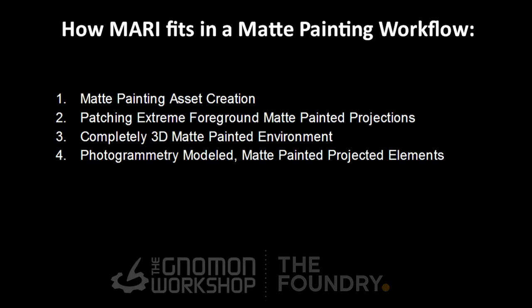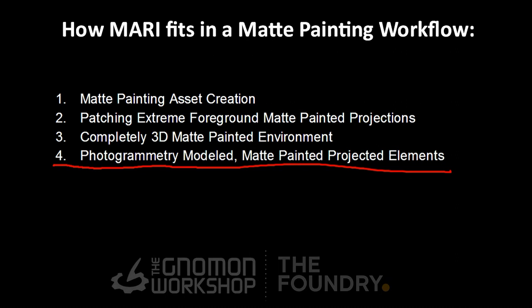The last workflow is incorporating a photogrammetry process into a matte painting workflow. You start with a series of images of an object, build a model from those images, paint it up in Mari, and export it via the Nuke-Mari bridge into Nuke — where you can re-light that model and integrate it on the fly into your matte painted environment. In the next part of this video, I'll walk you through taking a photogrammetry modeled object and making it a matte painted projected element that lives within Nuke.